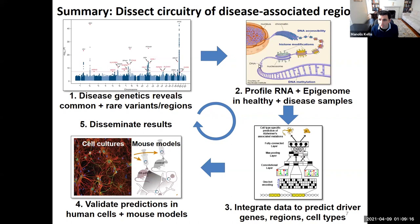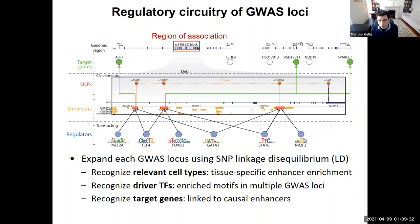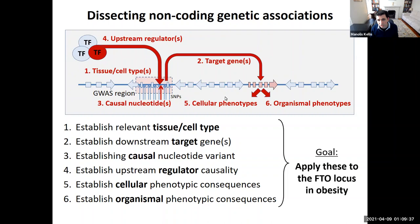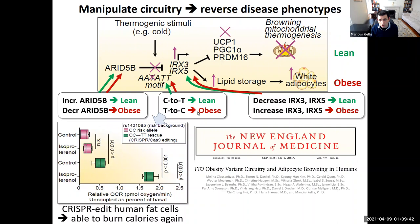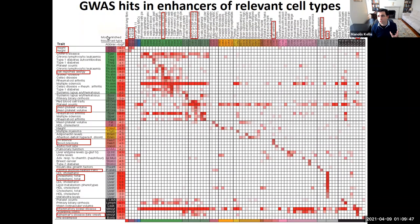What we've been talking about in this module is how do we integrate epigenomic information for fine mapping variants, then RNA and variation information, and deep learning models for sequence function, to start predicting driver genes, regions, and cell types to get the circuitry underlying these disease loci. We saw how these apply to specific domains to uncover and reverse the circuitry, and how we can use GWAS enrichments at the genome-wide level to find relevant tissues using a simple enrichment analysis.